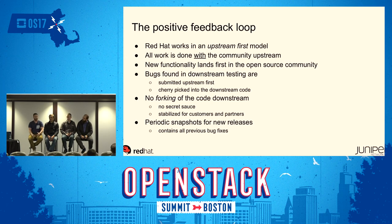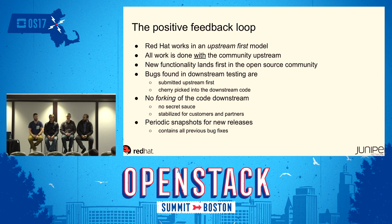When we do the next version snapshot, all those upstream changes are already there — no rebasing, no merge conflicts. The positive feedback loop results in what we call an upstream-first model: all work is done with the community upstream, new functionality lands upstream first before being pulled into the downstream, bugs found in downstream testing get pushed upstream, no forking, and companies can stabilize the code and provide functionality and support to their customers.